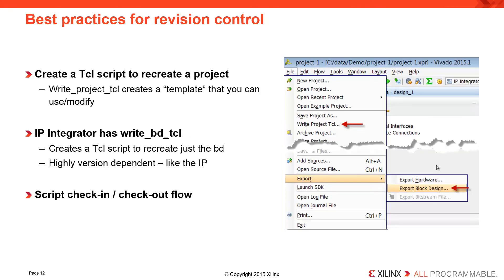A couple of quick best practices for revision control. To create that TCL script, you can use WriteProjectTCL to create a template that you can modify. This is also available as an option in the GUI. And for IP integrator, you can use WriteBDTCL. This creates a TCL script to recreate just the BD, and this is available in the GUI also under the export menu.